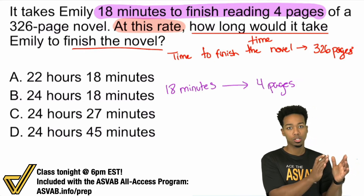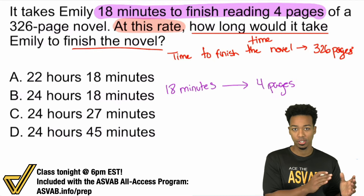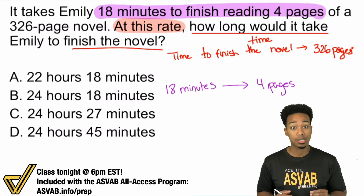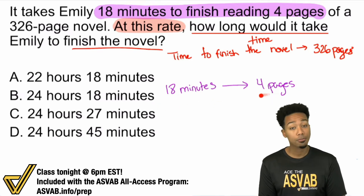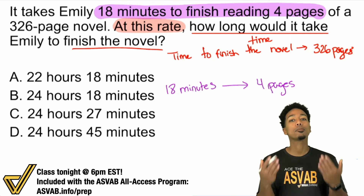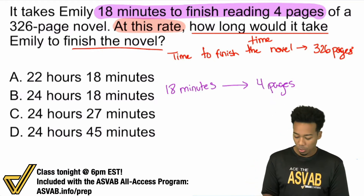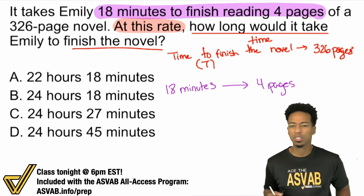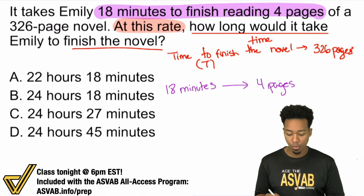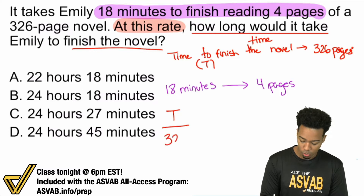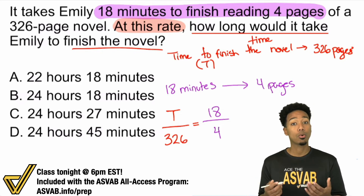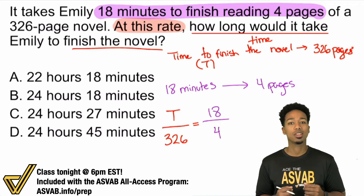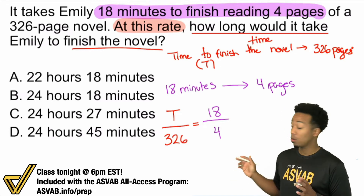We know it takes 18 minutes for four pages and we want the time to finish 326 pages — this is a proportion. How do I know? Because we're comparing the same things in the same way: time to pages, time to pages. I'll call the unknown time T, and set up the proportion as T over 326 equals 18 over 4. We're comparing the same things in the same way, which guarantees a proper setup.